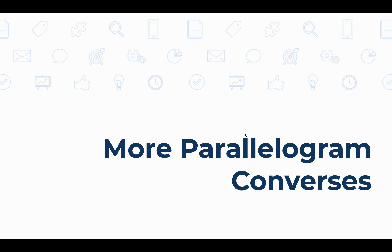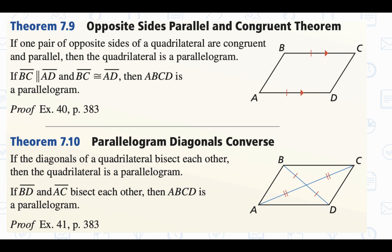Let's go through the last converse and the new theorem. For all the other conditions you have to know something about both pairs of opposite sides, both pairs of opposite angles, or two things about one pair of opposite sides — that's enough to conclude this is a parallelogram. What you have to know is that the opposite sides are both parallel and congruent, and that will make this a parallelogram. If you're not totally convinced, pause the video or look at the proof on page 383 — it's actually pretty cool.